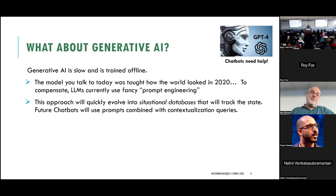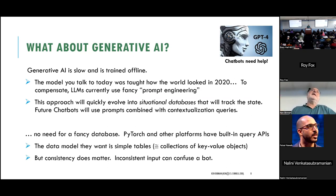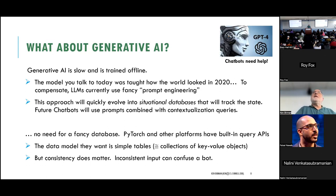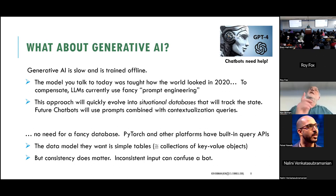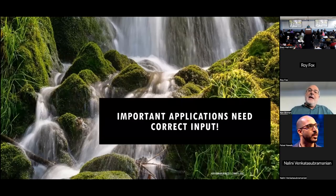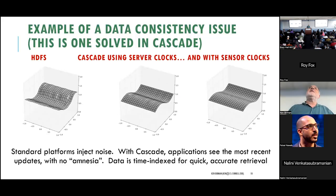Large language models will start querying a carefully curated — not the full internet — but a curated database of context information in real time, to compensate for not knowing anything after around 2021. That combination will make prompting much simpler. This creates a need for an edge database — not a fancy one. Tools like PyTorch, TensorFlow, and others can query data already; they just want flat tables with correct, consistent data. The key requirement is consistency.